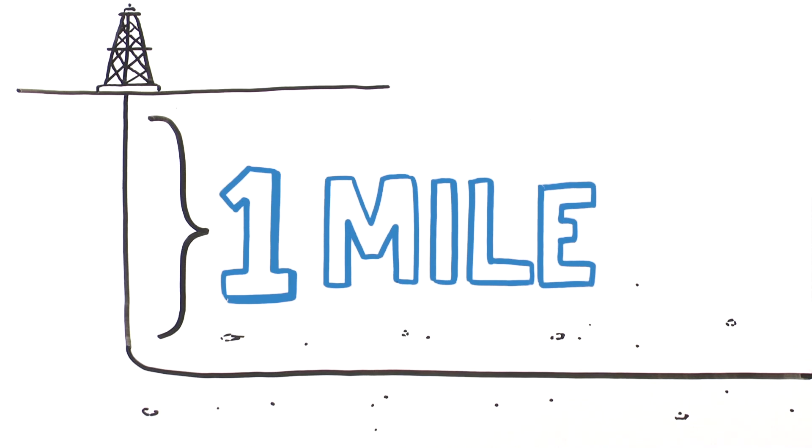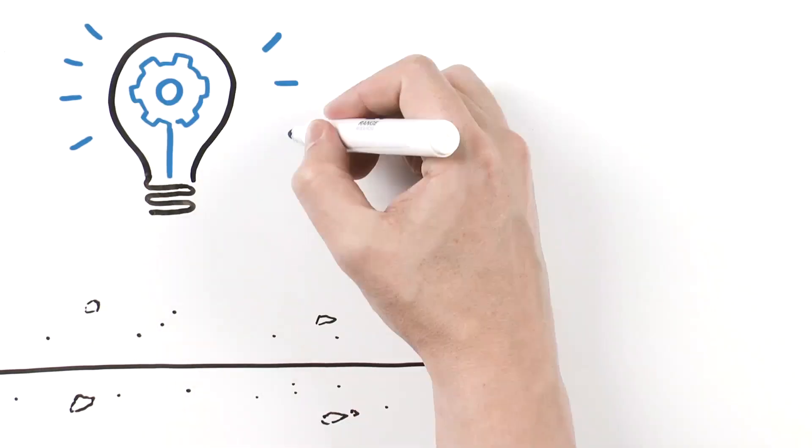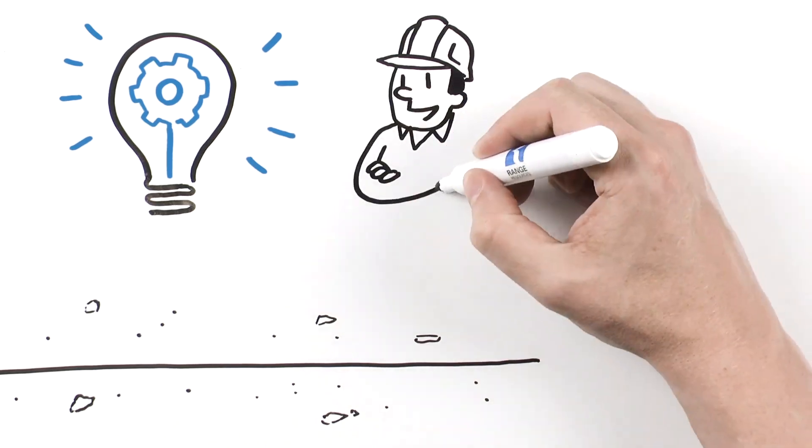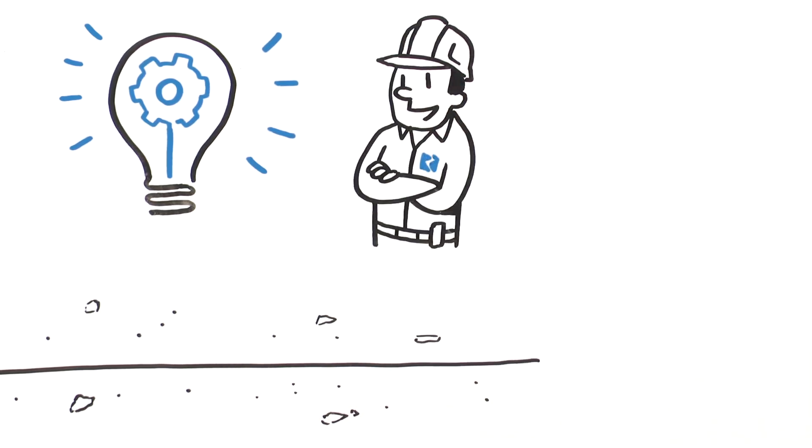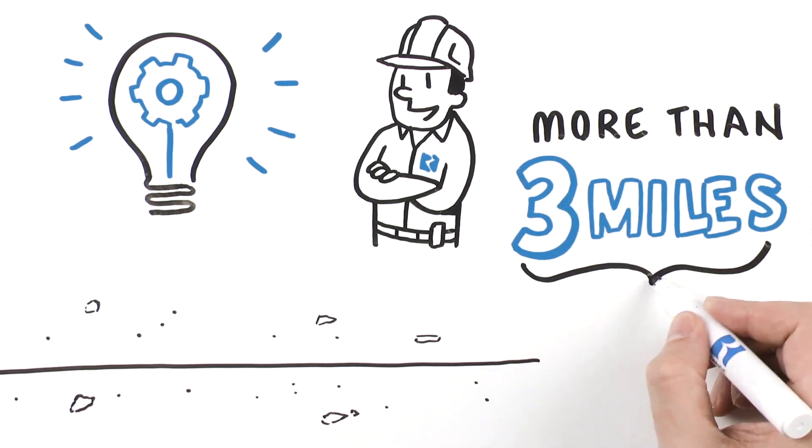Not that long ago, the average Marcellus well only extended about 3,000 feet. Through innovation, experience, and the development of cutting-edge technologies, Range is now drilling laterals that extend more than 18,000 feet or more than three miles.